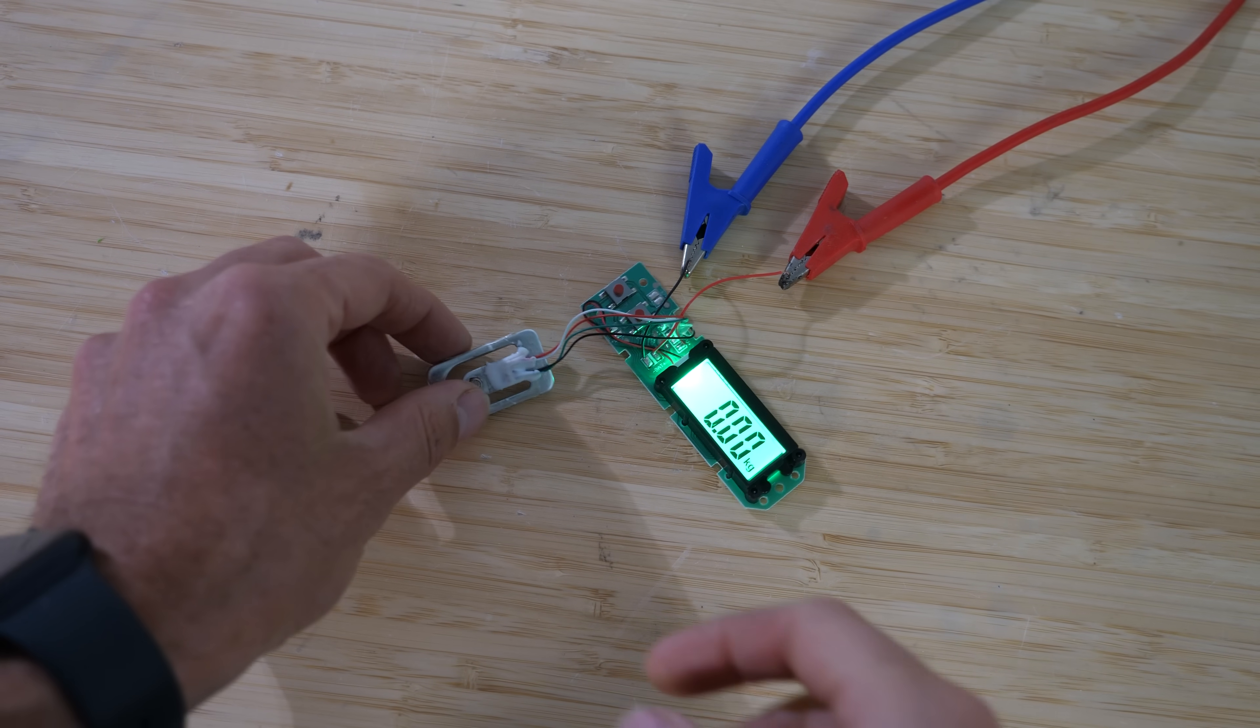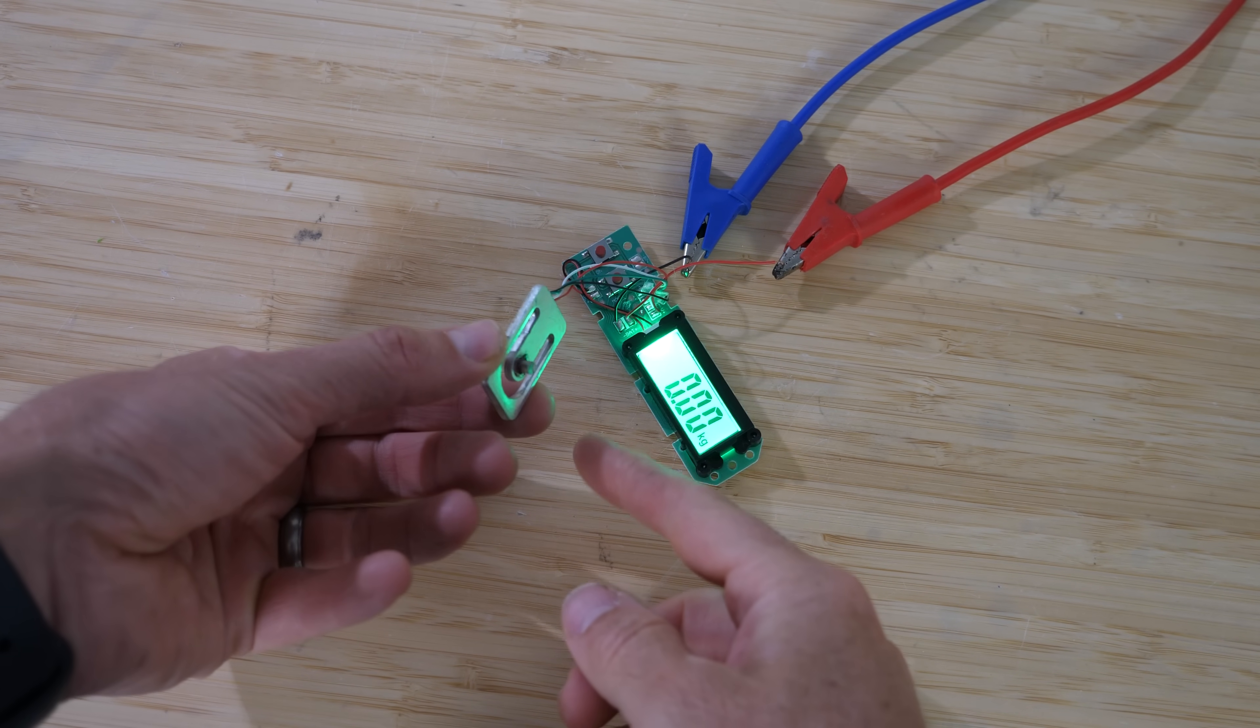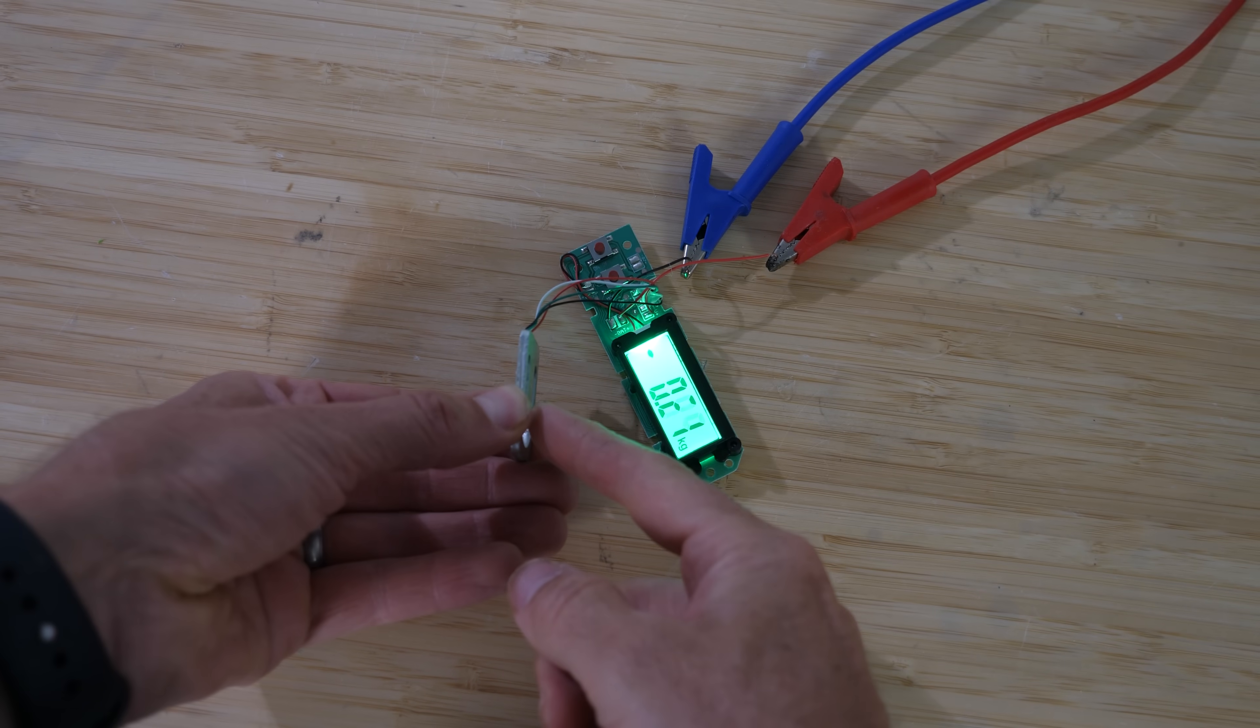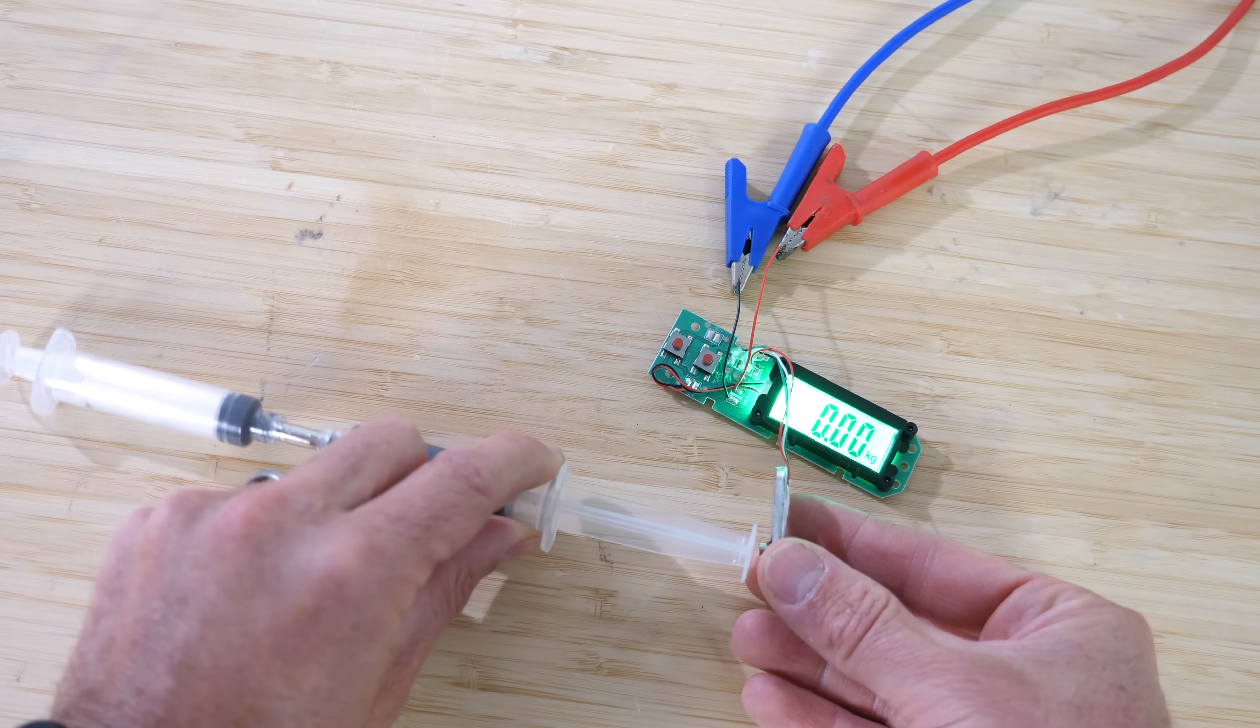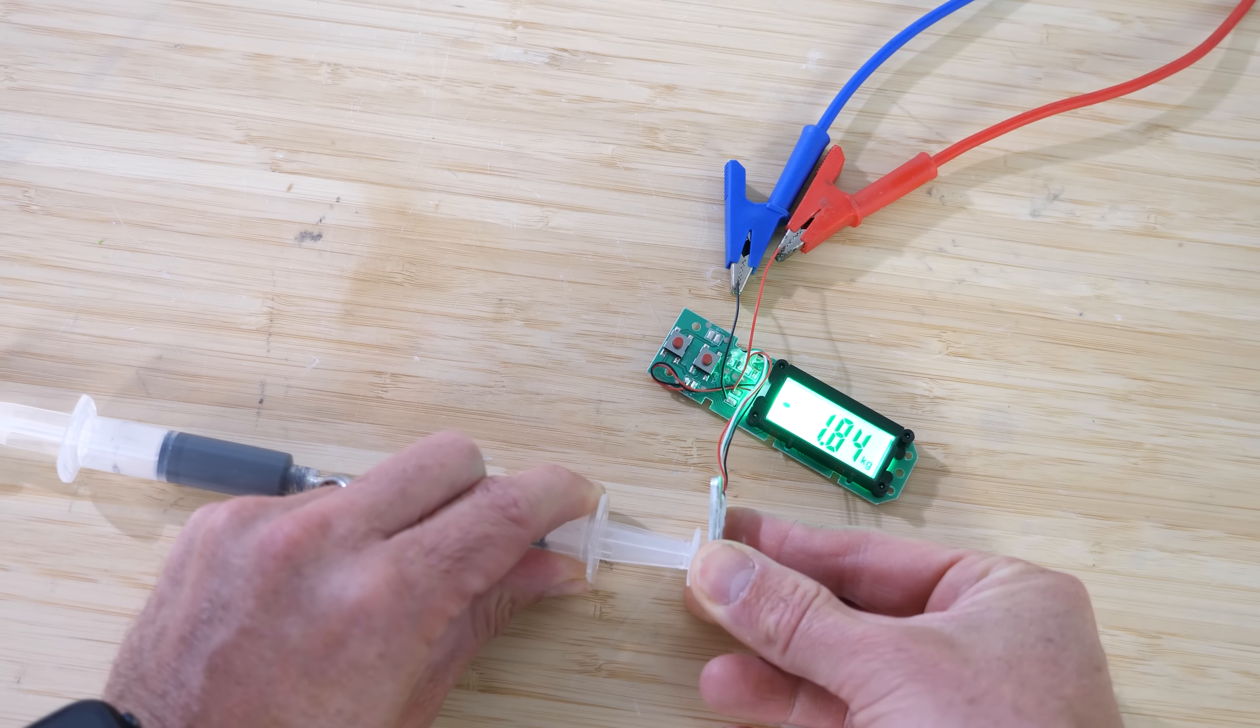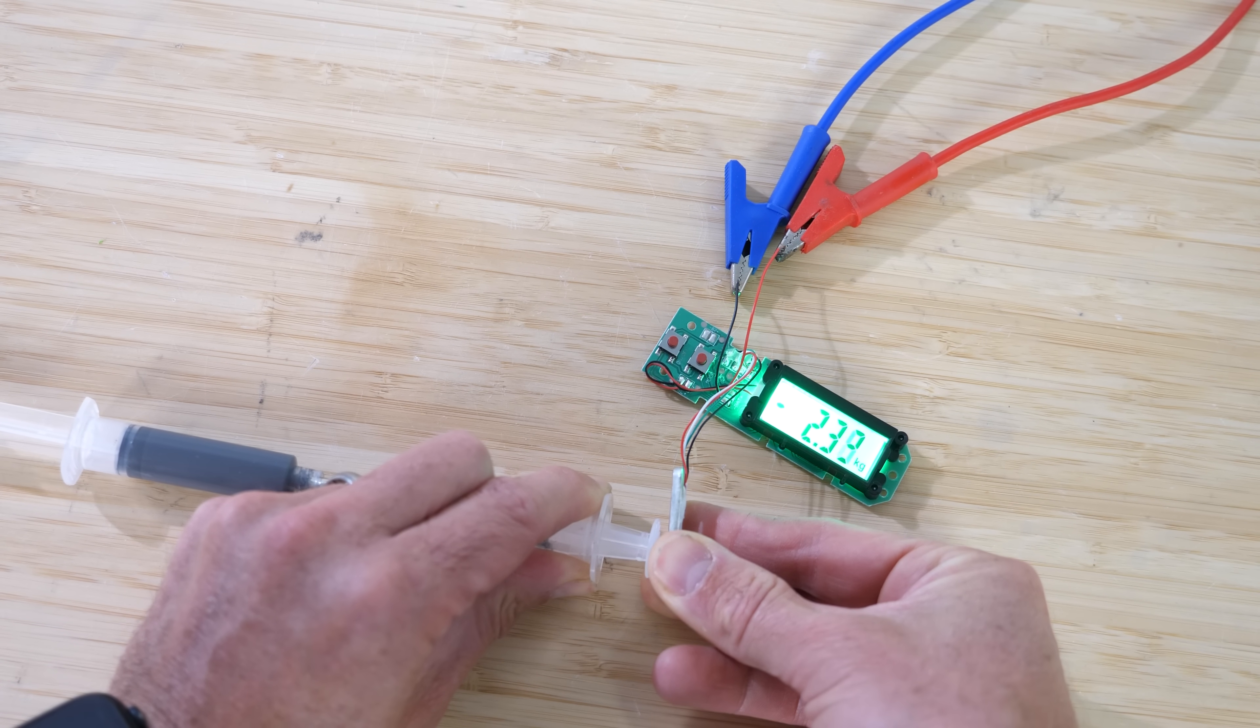So let's try to quantify how much thicker it's actually getting. I have a force sensor that I can push on the syringe with. Okay, let's see how much force it takes to move without the magnet on it. Three, two, one.